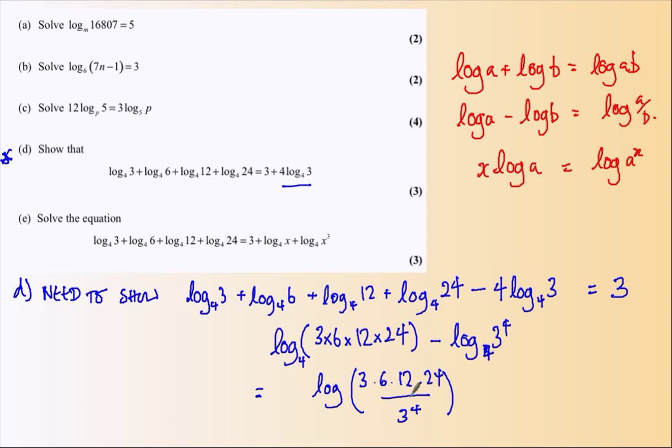If I do a little bit of cancelling here, 3 to the power of 4, there's one 3, so 3 in there, there's a 3 in there, and there's a 3 in there. Cancel all those 3s out, and I'm left with logarithm of 2 times 4 times 8, logarithm of 64, not forgetting these are all to base 4. And 4 to the power of 3 is 64, so the answer is 3.